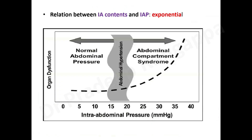Why emphasize evacuating fluid? There is a critical pressure at which there is an exponential rise in intra-abdominal pressure — after 15 to 20 mmHg the rise becomes exponential. Even a small decompression or evacuation of fluid can lead to significant reduction in IAP. Just as draining a small amount of CSF via an EVD significantly reduces ICP, the same principle applies to intra-abdominal hypertension.